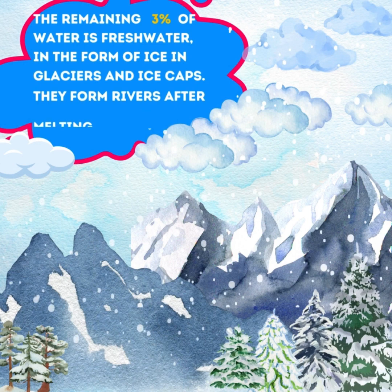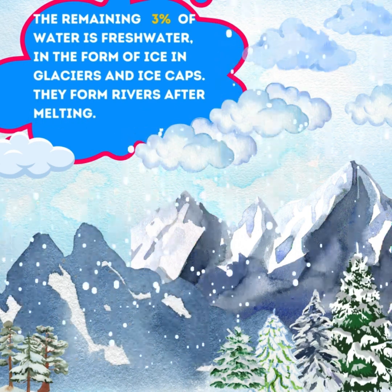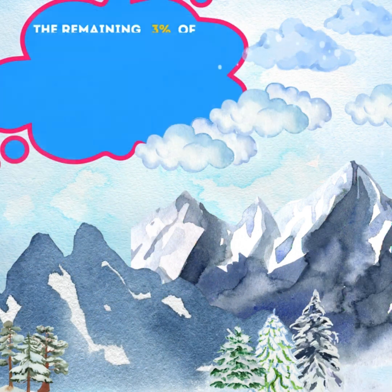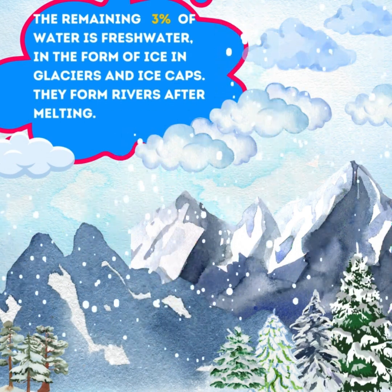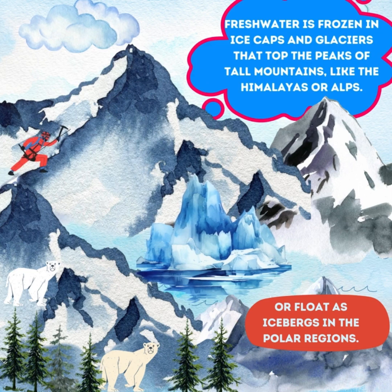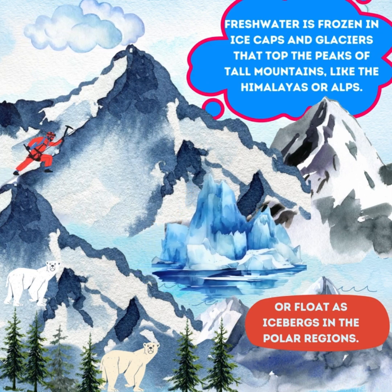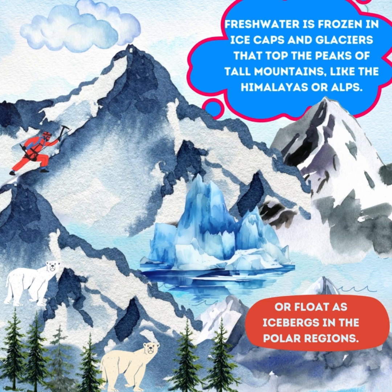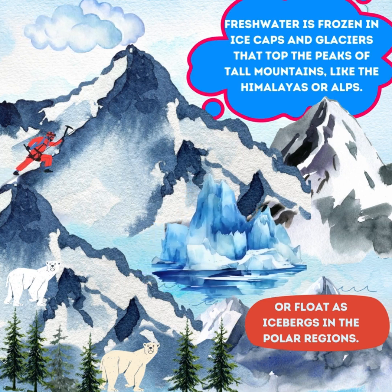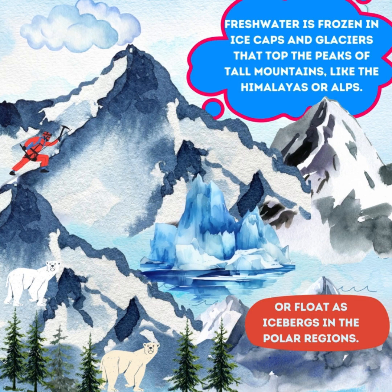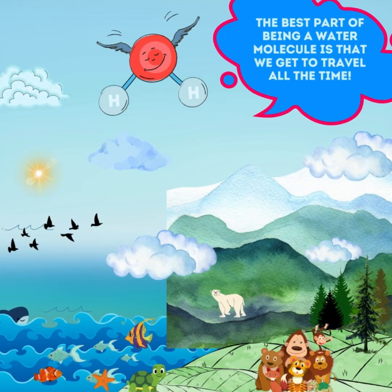The remaining three percent of water is fresh water, in the form of ice in glaciers and ice caps. They form rivers after melting. Fresh water is frozen in ice caps and glaciers that top the peaks of tall mountains like the Himalayas or Alps, or float as icebergs in the polar regions.